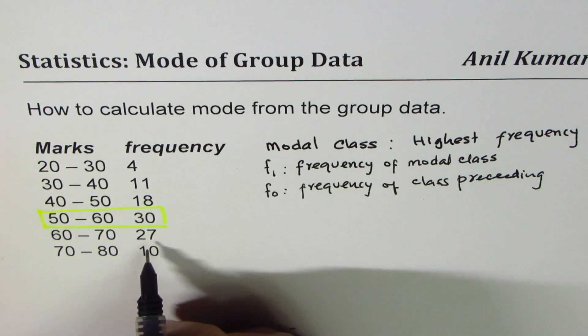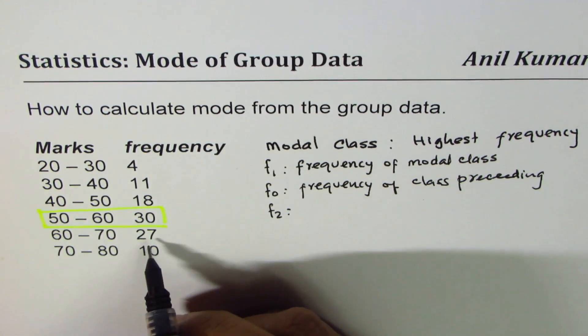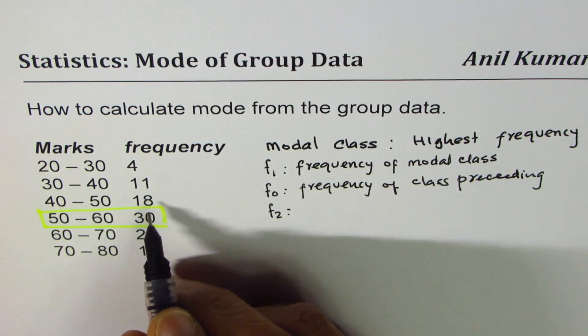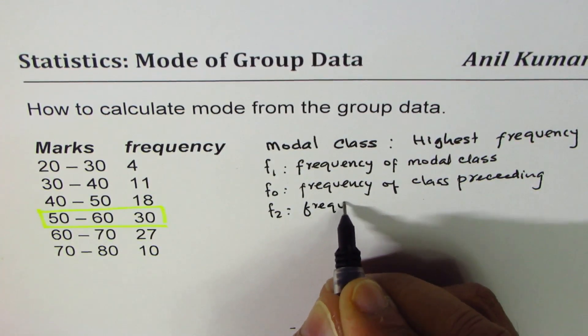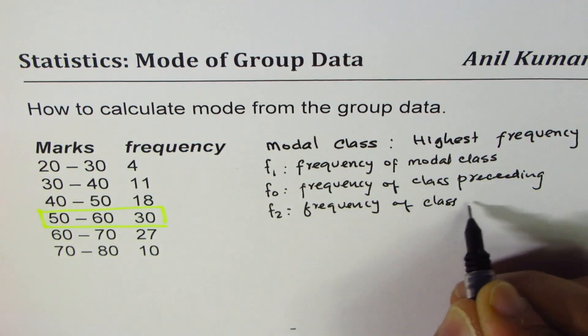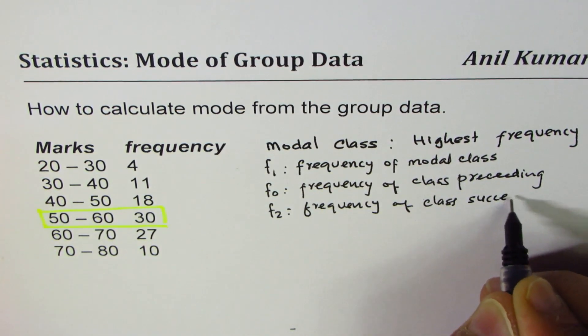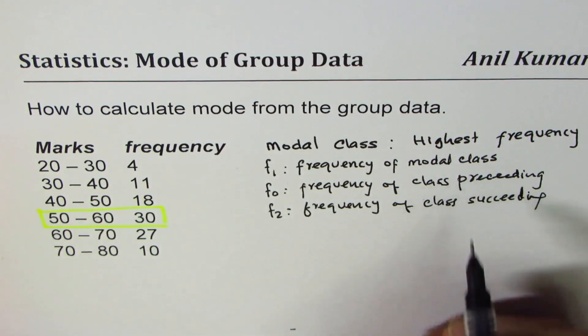We'll also deal with the frequency f2, which is frequency of the class succeeding the modal class. So we'll call f2 as frequency of class succeeding the modal class.